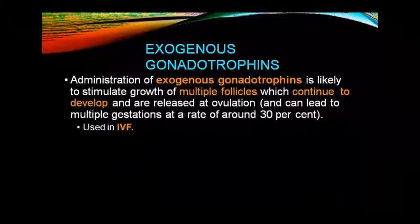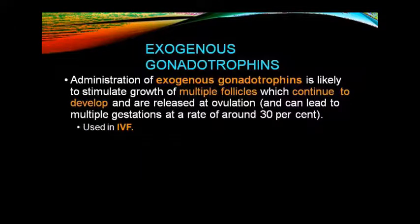Exogenous gonadotropins, when administered, cause multiple follicles to develop. These are continually developing follicles that become available and are released at ovulation, leading to a multiple gestation rate of around 30%. This is used in IVF — in vitro fertilization. We administer exogenous gonadotropins so that multiple follicles develop and ovulation is induced. The oocytes retrieved are then used in the IVF process.